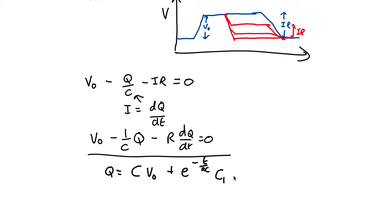Where C1 is an unknown constant of integration. As you've got a first order differential equation with a dQ by dt, there's going to be one constant. If it was a d2Q by dt squared, there'd be two constants. But only one.